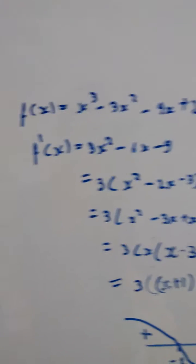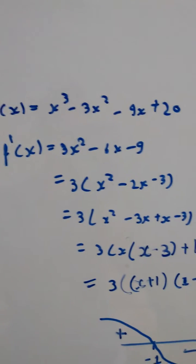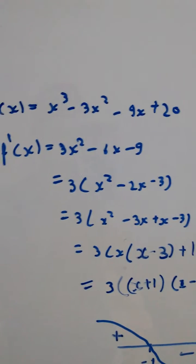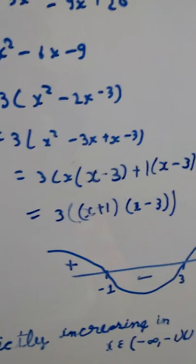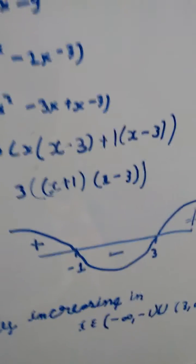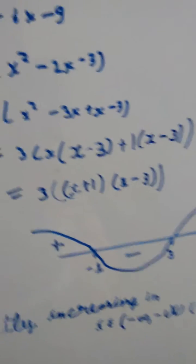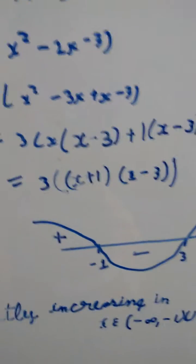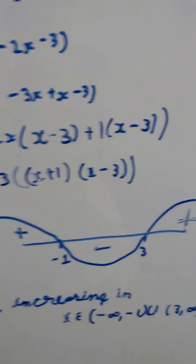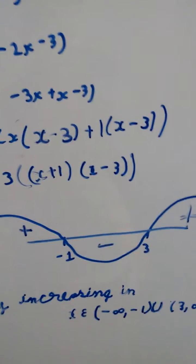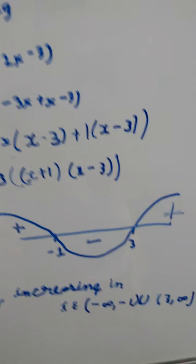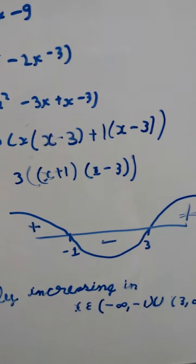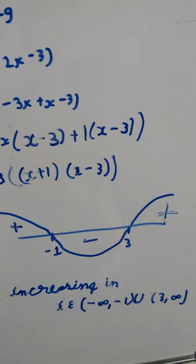Firstly, we find the derivative of this equation and then make the factor of it. After doing the factor of it, we draw the wavy curve by taking the critical points of this.